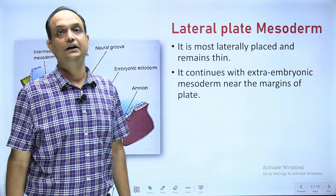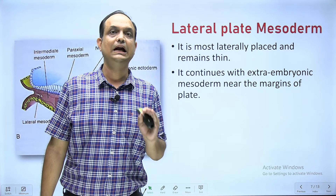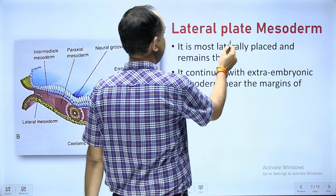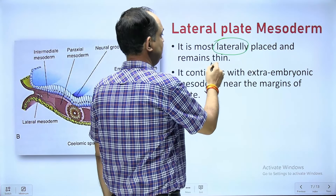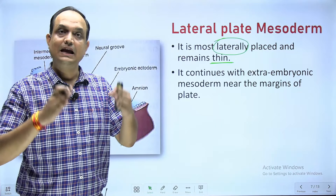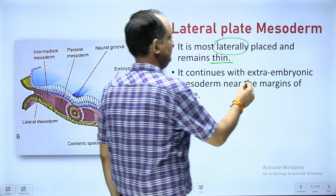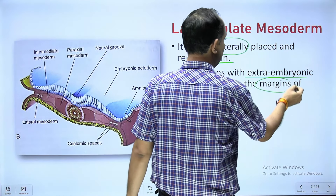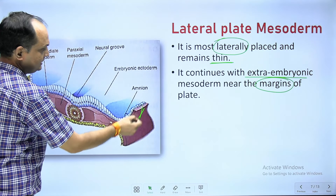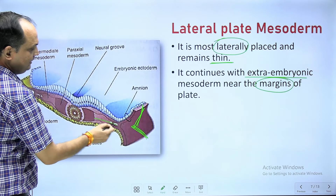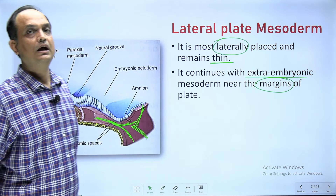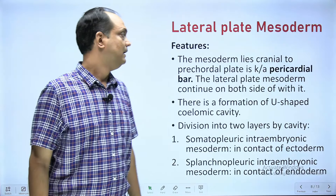The lateral plate mesoderm is the thinnest part and is laterally placed. This intra embryonic mesoderm laterally extends and is continuous with the extra embryonic mesoderm near the margins of the embryonic disc. In the diagram, you can see that the intra embryonic and extra embryonic mesoderms are continuous with each other.